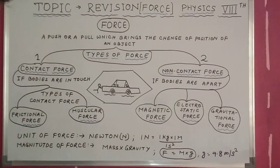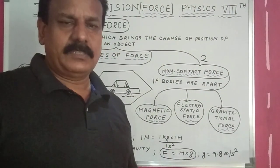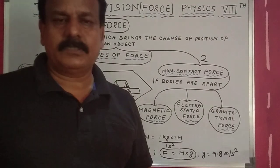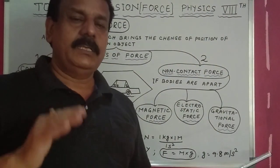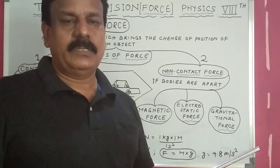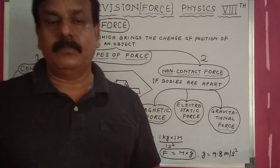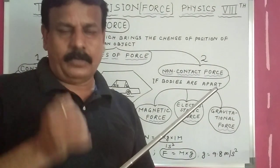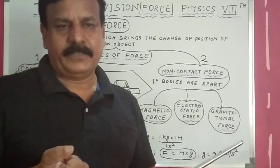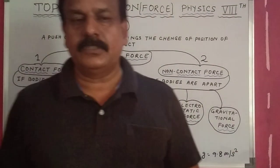Contact force is also of two types. The first one is frictional force — the force applied by the surface to oppose the motion of a moving body. That's why when you throw a ball on the surface, it stops after some time, due to friction. The second one is muscular force, which is also a contact force.